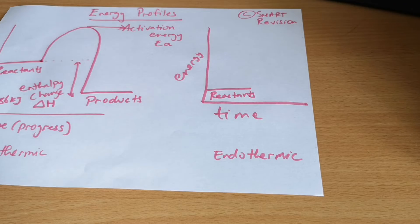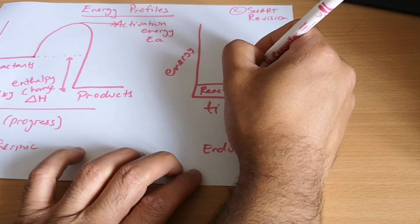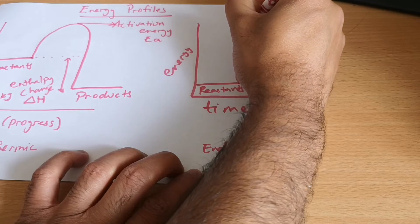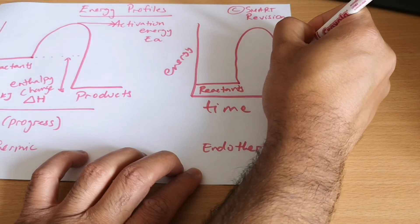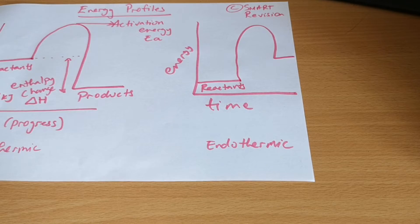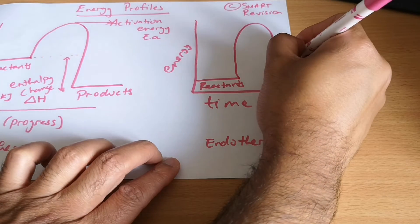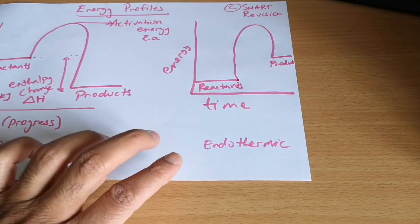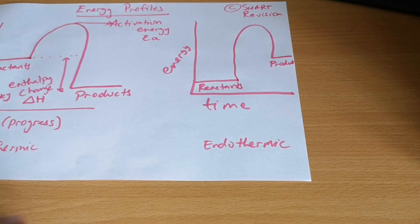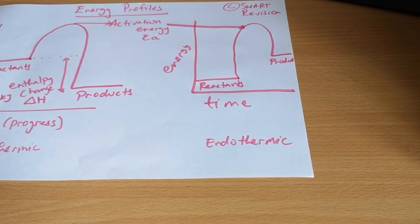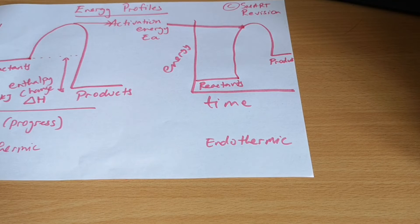So I need to give it a lot of energy, so I might actually be heating it up, heating it up, and then it's going to form the products, and then it's going to form products. Again, activation energy is on there, so as you can see I've got to actually give it a lot more energy.